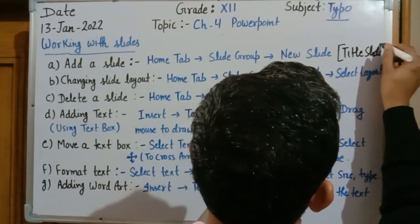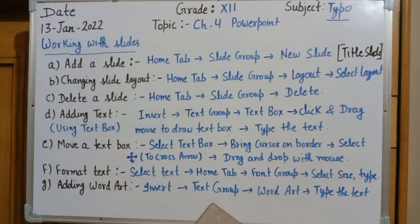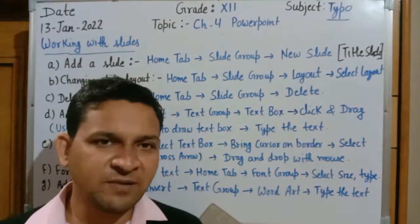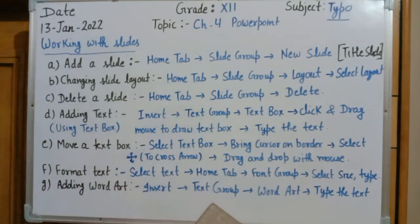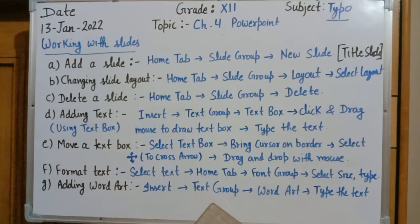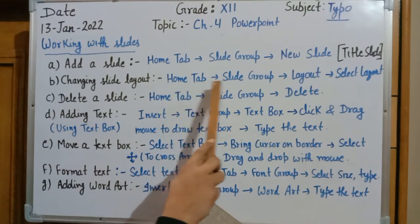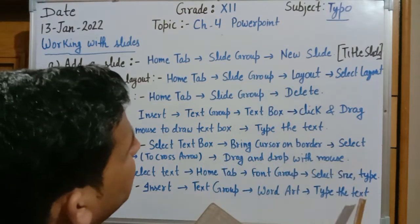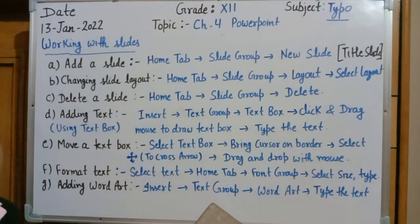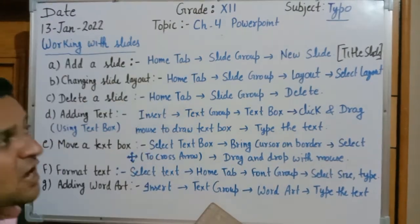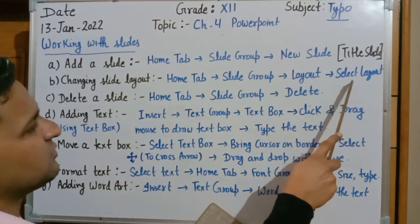Next is how to change the slide layout. There are a total of nine fixed types of layouts available in slide preparation. To select a layout: click on the Home tab, select Slide group, in Slide group select Layout, and then select the specific layout you want from the nine available layouts.